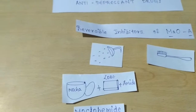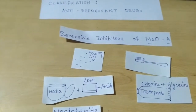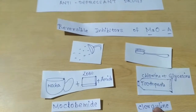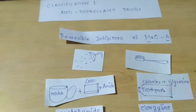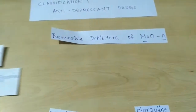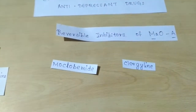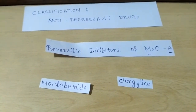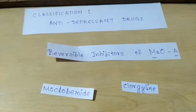And one should brush their teeth with a toothpaste which has chlorine and glycerine in it. A toothpaste having chlorine and glycerine gives us the drug chlorgyline. So friends, the reversible inhibitors of MAO-A are moclobemide and chlorgyline. We will cover the other drugs in the next video. Thank you for watching.